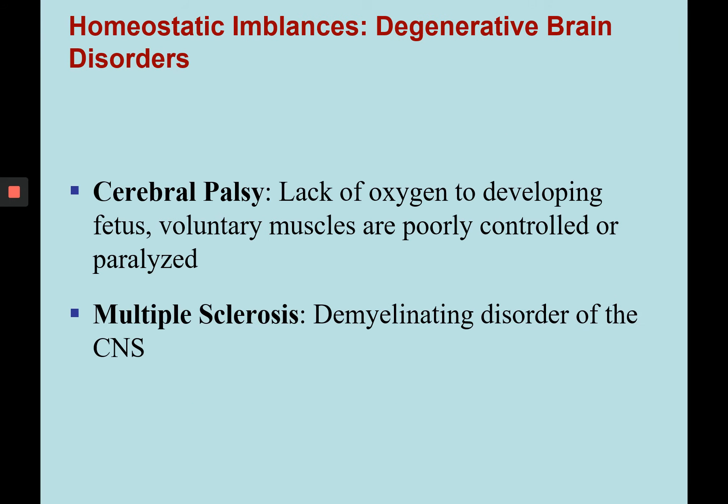The basal nuclei are really important for motor activity and alertness. Cerebral palsy can be caused before birth, at birth, or shortly thereafter — a lack of oxygen to the developing fetus or newborn that causes voluntary muscles to be poorly controlled or developed, ranging from mild to severe, with the severe version being complete paralysis. Multiple sclerosis, discussed at the end of Chapter 11, is a degenerative demyelinating disorder of the central nervous system in which oligodendrocytes that myelinate the axons of central nervous system neurons are destroyed.